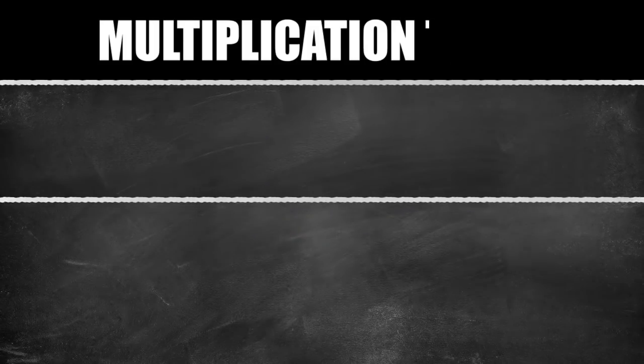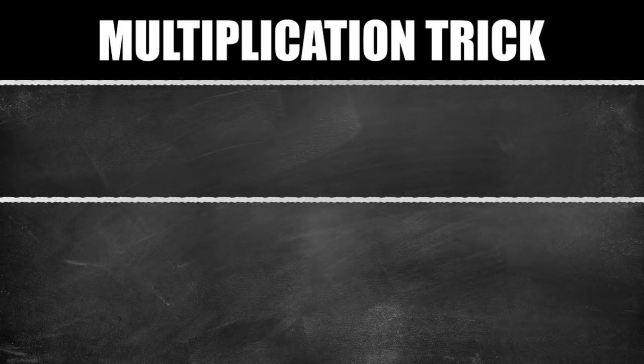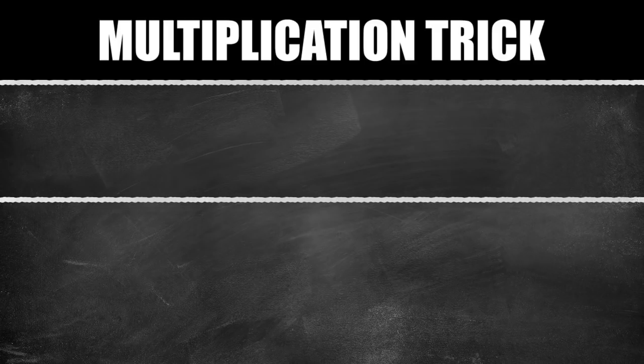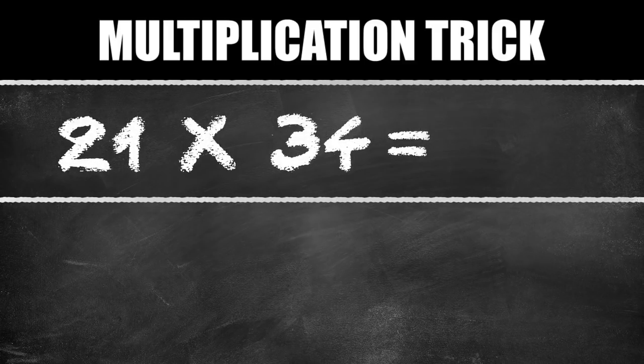Number 5, the multiplication trick. If you want to multiply numbers with a maximum of two digits, then this trick is awesome. Let's say our numbers are 21 and 34.